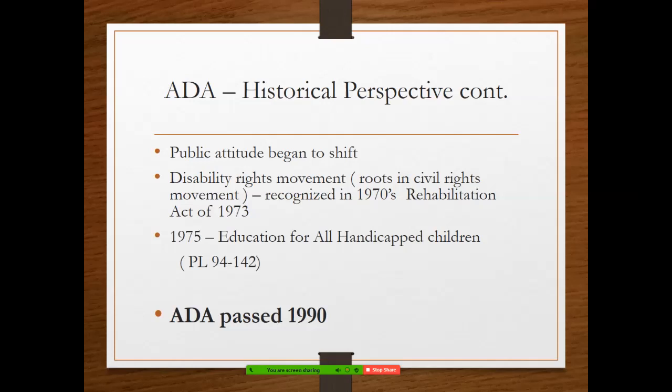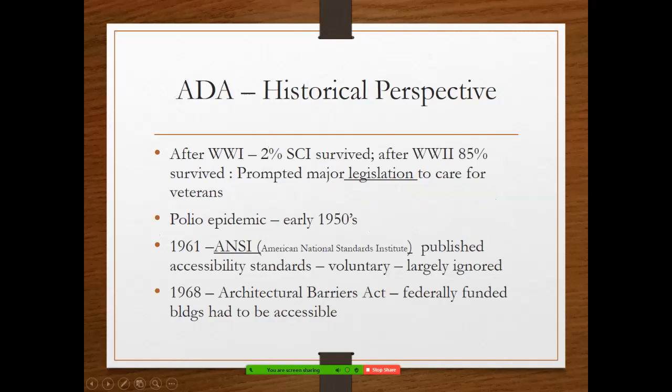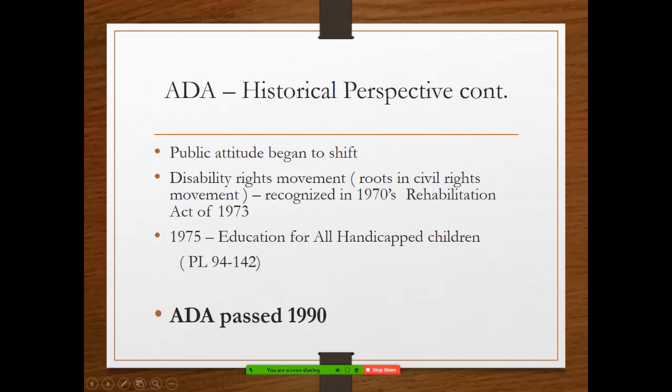The Americans with Disabilities Act was finally passed in 1990. So from the Architectural Barriers Act in 1968 to the ADA in 1990 — you can see that we think we're in a quagmire now of political actions where we can't get anything done, but we have historical precedent showing it just takes time.